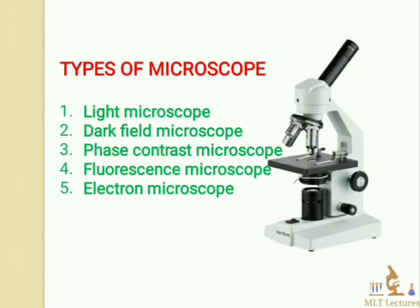Moving to types of microscope, there are commonly five types. The first is the light microscope, also called the bright field microscope — it is the most frequently used microscope in labs. The second is the dark field microscope, used to identify living skin cells and bacteria like spirochetes.